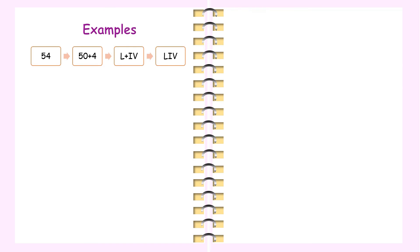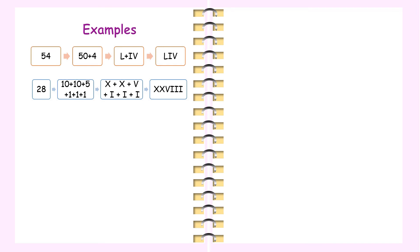Let's see a few examples. 54 is written as 50 plus 4, that is L plus IV, so 54 is written as LIV. 28 is written as 10 plus 10 plus 5 plus 1 plus 1 plus 1, that is X plus X plus V plus I plus I plus I.